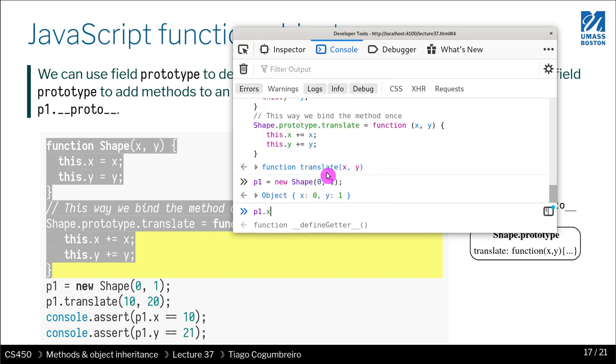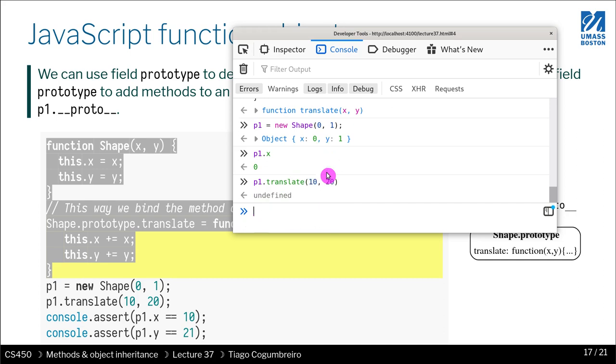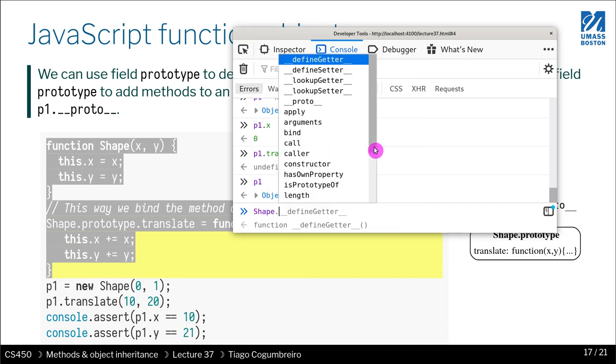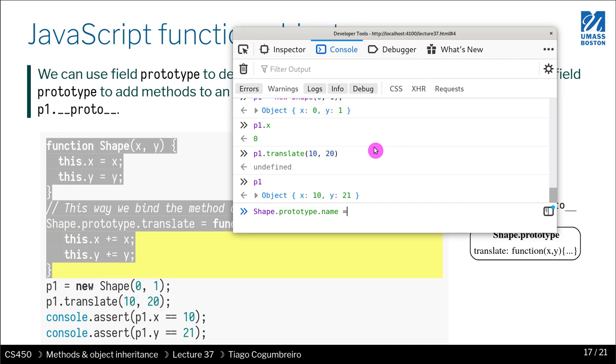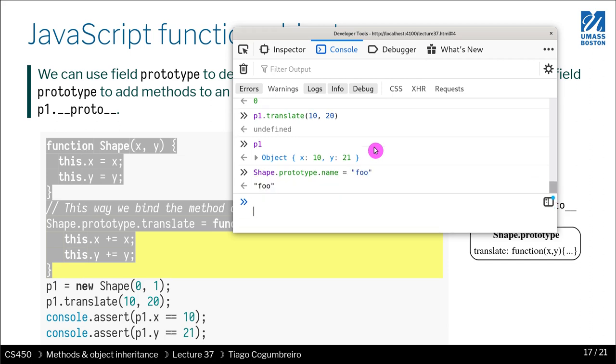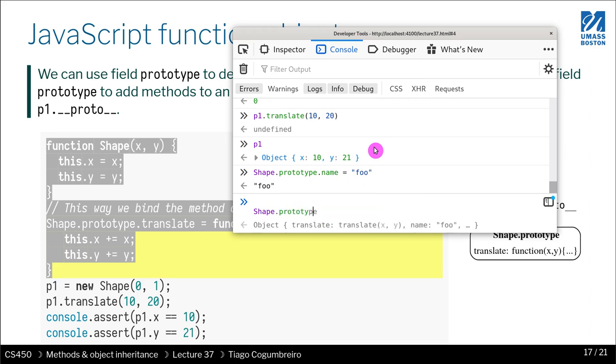Now P1 has been translated, 10 and 20. And now what I can do is I can do shape.prototype, and I can say, oh, now the prototype, I want to add a new field called name. I want to say foo. So now if I look at my shape.prototype, I see that it has two fields, the method translate and the field name called name.